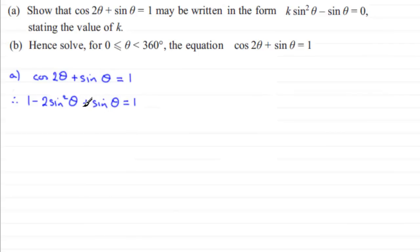If we subtract 1 from both sides, the 1's will give us 0. Then if I add 2 sin²θ to both sides and subtract sin θ from both sides, I end up with 2 sin²θ - sin θ = 0. That is what we had to show, and we can see that k has to be 2. So therefore k = 2.